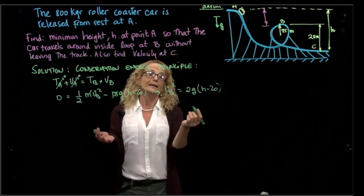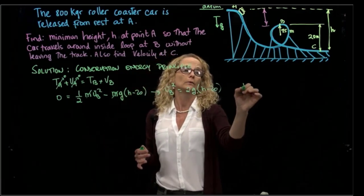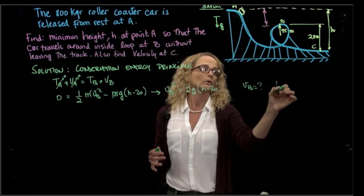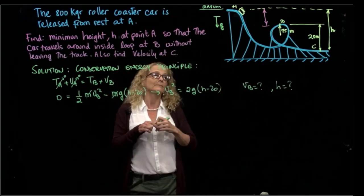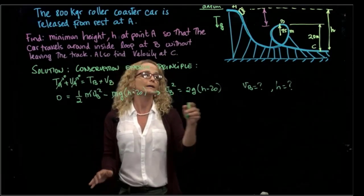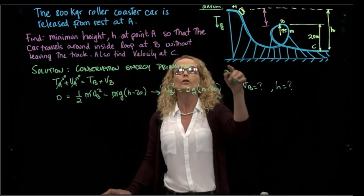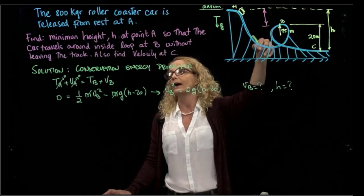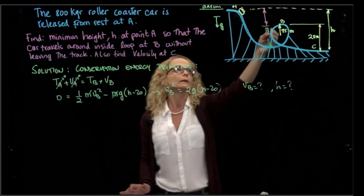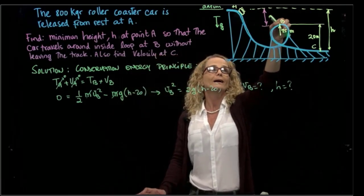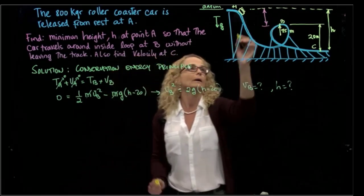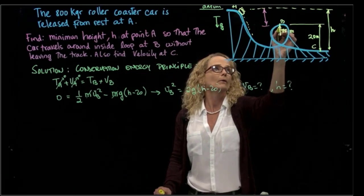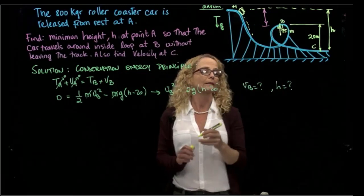However, we have two unknowns, because we have the unknown of vB, and we have the unknown of h. So we have to do a different approach. What we are being asked is that we want to find that height so that it doesn't leave the track. So we will have to do a little bit of an analysis when the car is at B. So when the car is at B, we can imagine that it goes right there, goes up, and it stays right there.